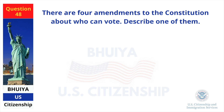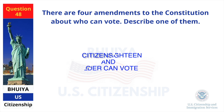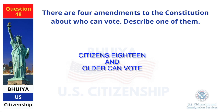There are four amendments to the Constitution about who can vote. Describe one of them. Citizens 18 and older can vote.